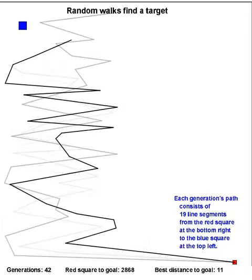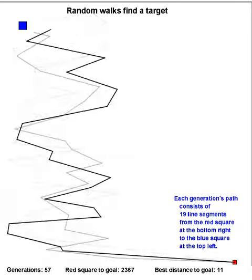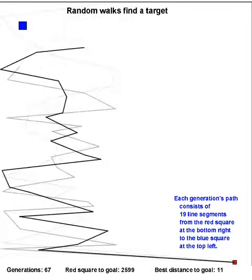Well, each generation creates a 19-segment path, which is black.